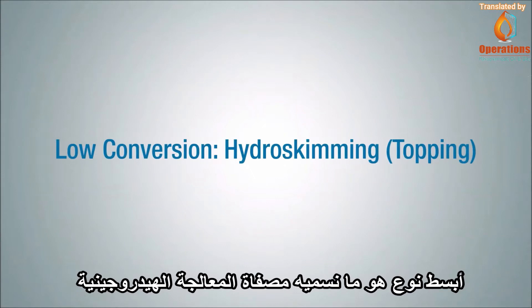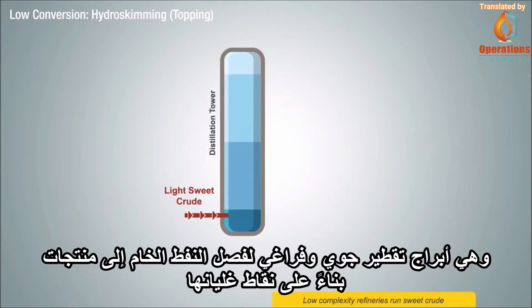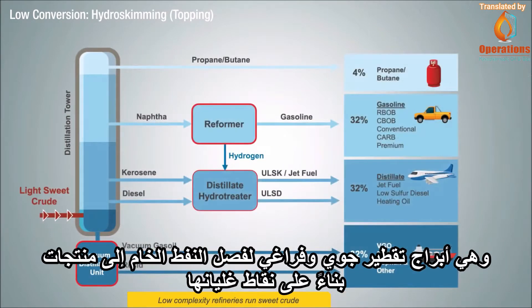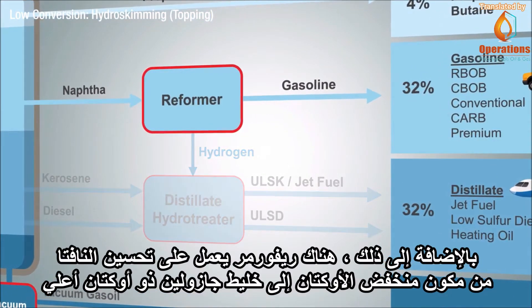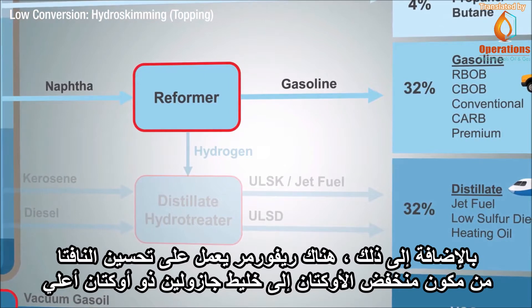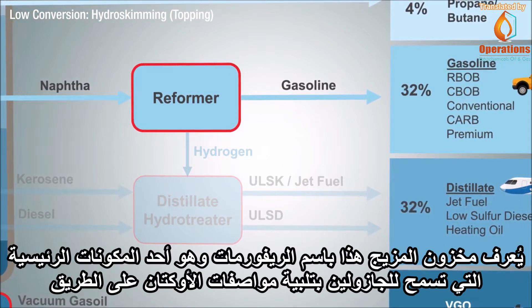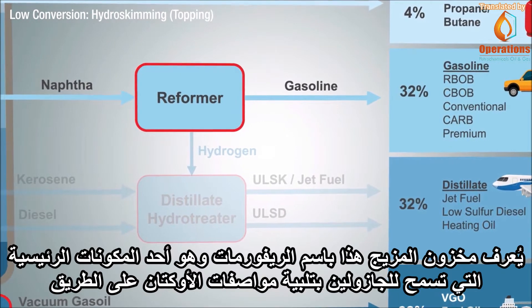The simplest configuration is what we call the Hydra Skimming Refinery — you may hear this referred to as a topping plant or a topping refinery. It has atmospheric and vacuum distillation towers to separate crude oil into fractions based on their boiling points. There's also a reformer that upgrades naphtha from a low-octane component to a higher-octane gasoline blendstock, known as reformate, which is one of the key components that allows gasoline to meet on-road octane specifications.